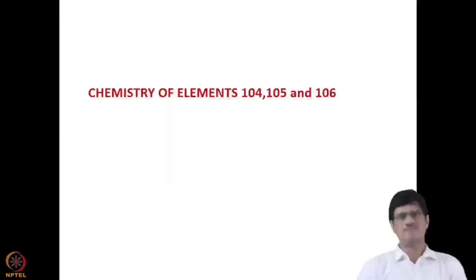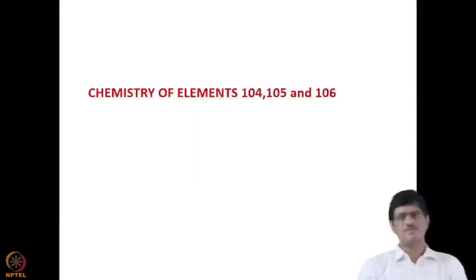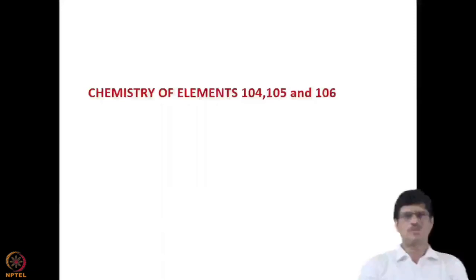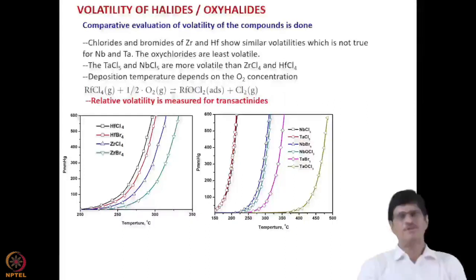Gas phase chemistry is relatively easier because of the very fast transport of gaseous molecules. In solution phase chemistry, some sort of separation is required, as discussed in the previous lecture on automated chemistry. Solution phase chemistry mostly involves partitioning experiments such as ion exchange chromatography or solid extraction. In the gas phase, mostly the volatility of halides or oxyhalides is studied.